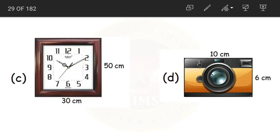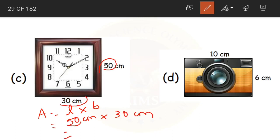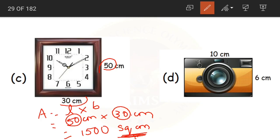Next, question C. This is a rectangle because the length is 50 centimeters and the breadth is 30 centimeters — the measurements are different. Area of rectangle equals length into breadth equals 50 centimeters into 30 centimeters equals 1,500 square centimeters. Even though it is a rectangle, always mention 'square' in the unit of measurement for area.